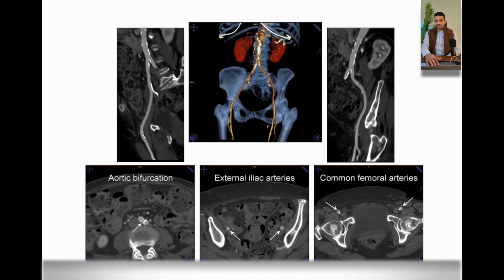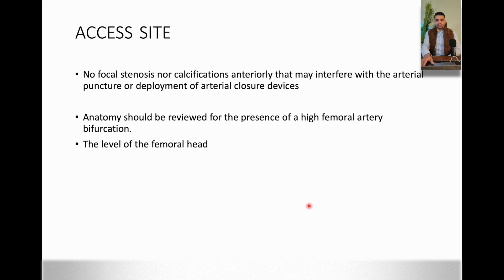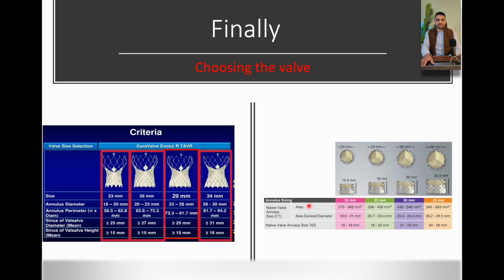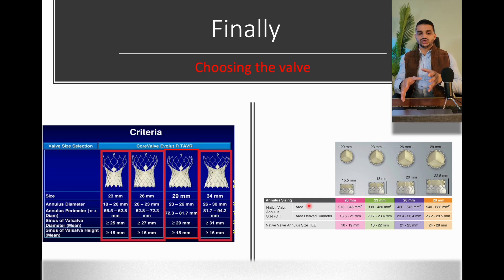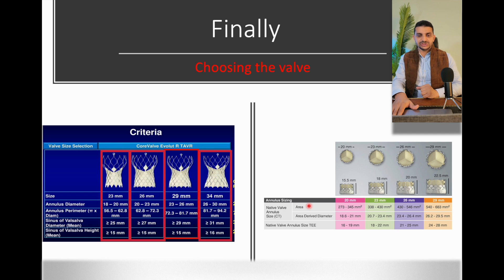These are the images you can get with multi-slice CT for vascular access planning. We will go through vascular access step by step. Finally, these are the charts from which we get the measurements and upon which we choose the valve to implant for our specific patients.